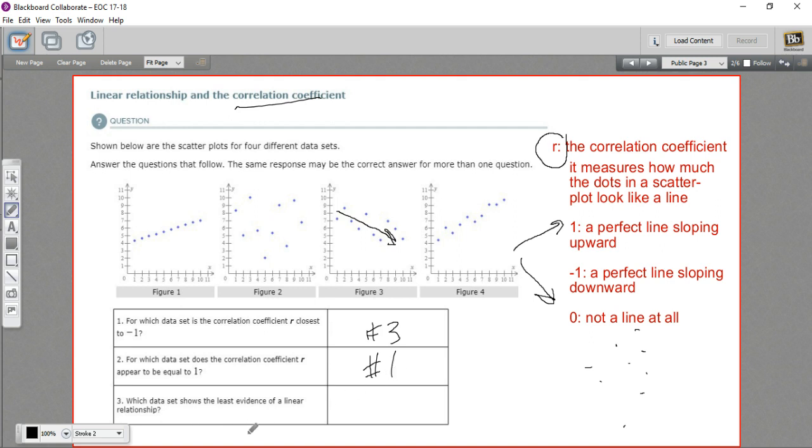And then 3 says, which data set shows the least evidence of a linear relationship. And all that means is the dots look like a line. And figure 2 is the one that looks like kind of a random cloud. So the correlation coefficient here is probably 0. So this is the one that has the least linear relationship. So that's figure number 2.